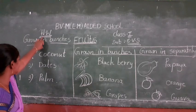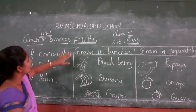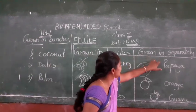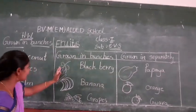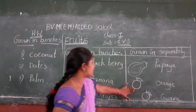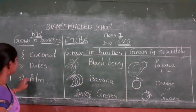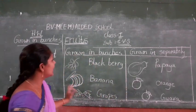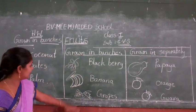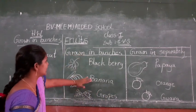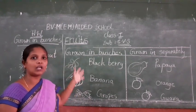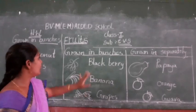I am going to give homework for you. So this is your homework - grown in bunches, grown in separately. You have to draft fruits like this and write the names. You have to write in this format. Ask your parents and write the names in these boxes - grown in bunches. You have to collect some fruits names and write in this box.